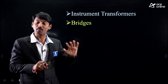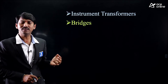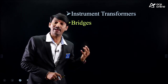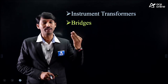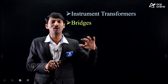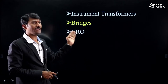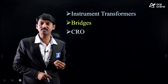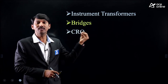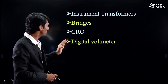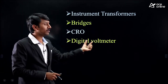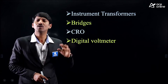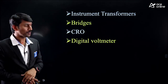Bridges is one of the biggest important chapters — DC bridges and AC bridges. In DC bridges we measure resistance; in AC bridges, self inductance, mutual inductance, frequency, and capacitance. After that, CRO — cathode ray oscilloscope — what we measure, basic principles. Then Digital Voltmeter, where number display and seven-segment display are involved, and their corresponding operation.